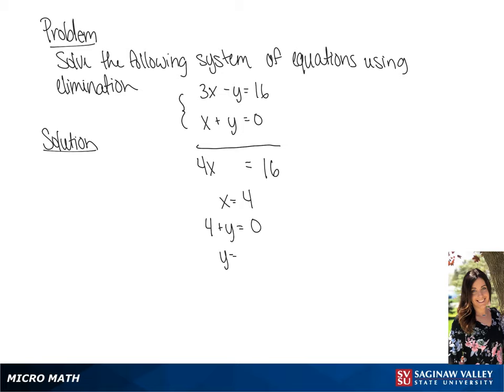Now we can substitute the 4 for the x in the second equation. We get 4 plus y equals 0, and y equals negative 4.